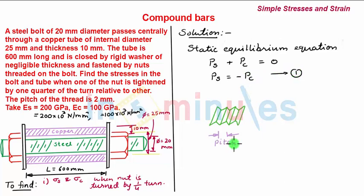Before the compatibility equation, let's discuss the pitch of a bolt. The pitch is defined as the length the bolt moves when the nut is turned by one revolution. In this case, the pitch is given as 2 mm.